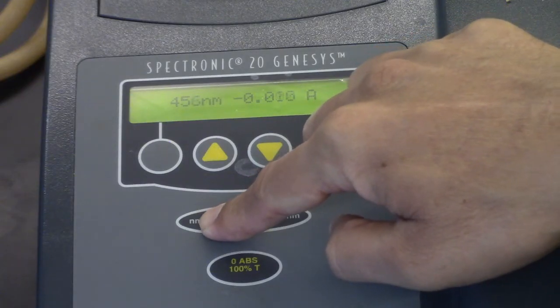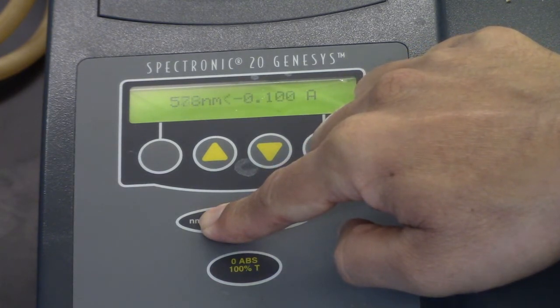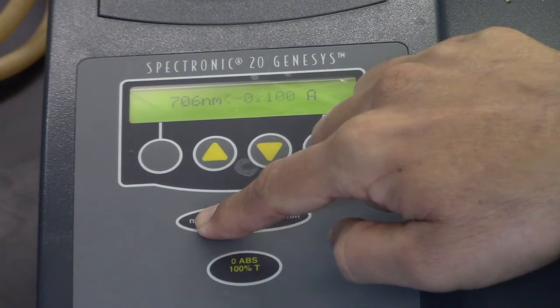Once you identify the wavelength with the maximum absorbance, set the spectrometer to that wavelength for all remaining absorbance readings.